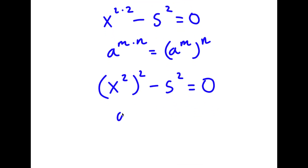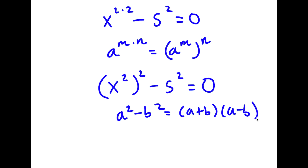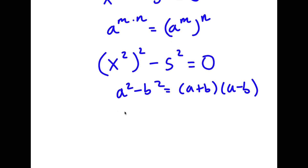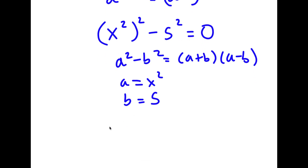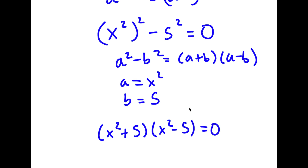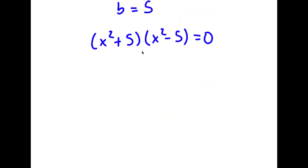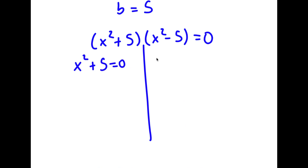Now if I have something in the form a squared minus b squared, this equals a plus b times a minus b. So in this case, a is x squared and b is 5. So I have x squared plus 5 times x squared minus 5 is equal to 0. This gives me two equations: x squared plus 5 is equal to 0, and x squared minus 5 is equal to 0.